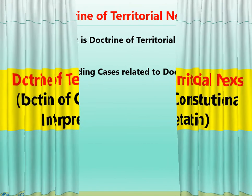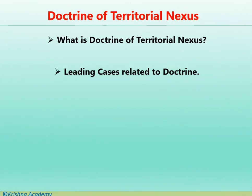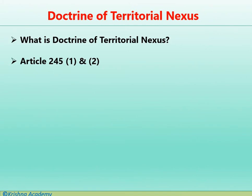We are going to cover this doctrine across two topics. First, we will understand what this doctrine is and what are the leading cases related to it. So, the Doctrine of Territorial Nexus is basically related to Article 245 of the Constitution of India. As you are aware, in our Constitution under Schedule 7, the power to make legislation has been divided between the center and the states. Under Article 245, it says that Parliament or a state can make law based upon their competence as per Schedule 7.